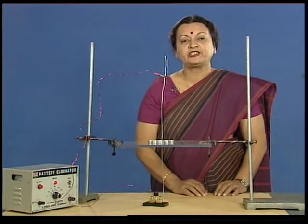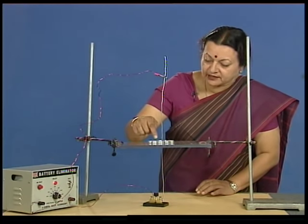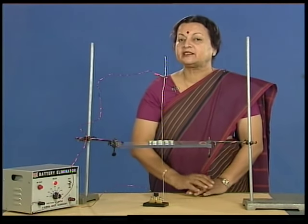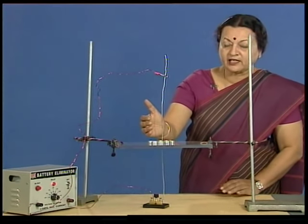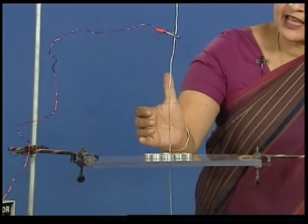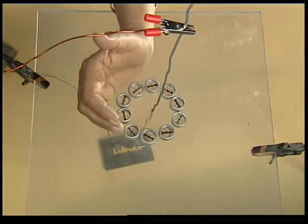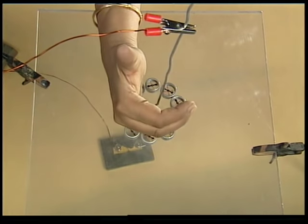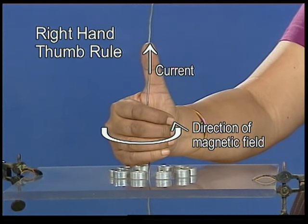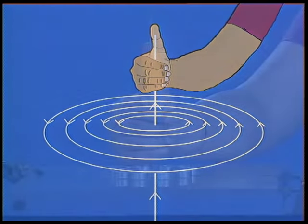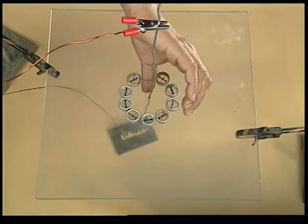So we can see that a definite relationship exists between the direction of current through the wire and the direction of magnetic field around it. There is a very convenient way to remember this. Imagine wrapping the fingers of your right hand around the wire in such a way that the thumb points in the direction of the current. Then the fingers wrapped around the wire will point in the direction of the field lines. This rule is called the right hand thumb rule.